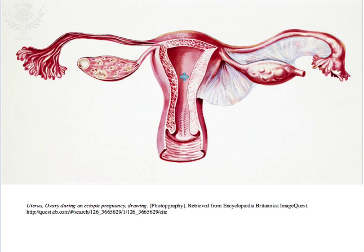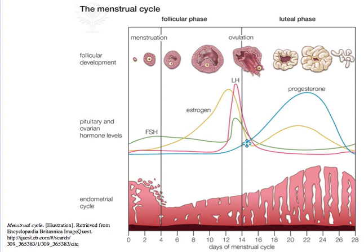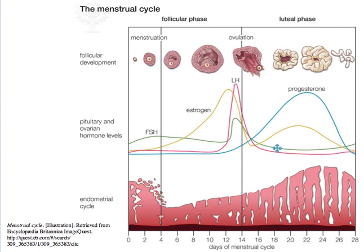The corpus luteum produces the hormone progesterone, which plays a critical role in maintaining the lining of the uterus, while also producing a lower level of estrogen. Once again, this lower concentration of estrogen acts as a trigger to switch off the production of FSH and LH by the anterior pituitary gland.